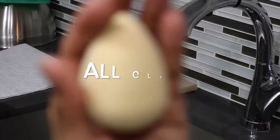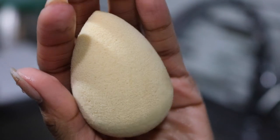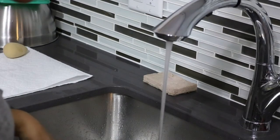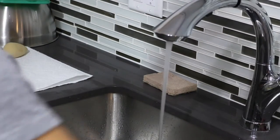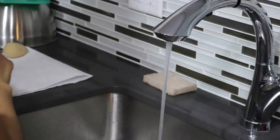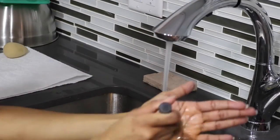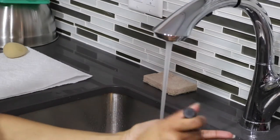Now grab your makeup brush, and again, you're just going to dip it into the mixture. Take the brush and either move it in a circular motion on your hand or back and forth, depending on the type of brush you're cleaning.